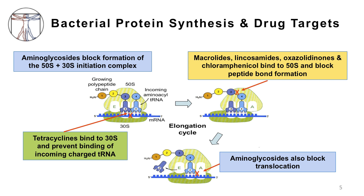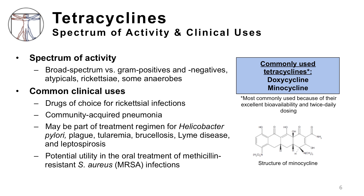The tetracyclines are broad-spectrum agents most commonly used for mild to moderate community-acquired infections, such as community-acquired pneumonia, given their activity versus common gram-positive pathogens, gram-negative pathogens, and atypical pathogens. Two commonly used tetracyclines are listed in the blue box. They are usually the drugs of choice for some rickettsial infections, including Rocky Mountain spotted fever. Tetracyclines may also be part of treatment regimens for a variety of relatively uncommon infections, such as plague, tularemia, brucellosis, and Lyme disease, to name a few.